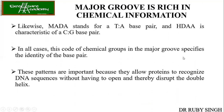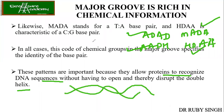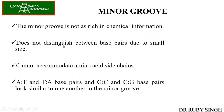The code of chemical groups in the major groove specifies the identity of the base pair. These patterns allow proteins to recognize the DNA sequence without having to open and thereby disrupt the double helix. So if any protein comes, it doesn't need to open the DNA — from the major groove it can bind and recognize the sequences directly. The minor groove, by contrast, is not rich in chemical information because it cannot distinguish between base pairs.